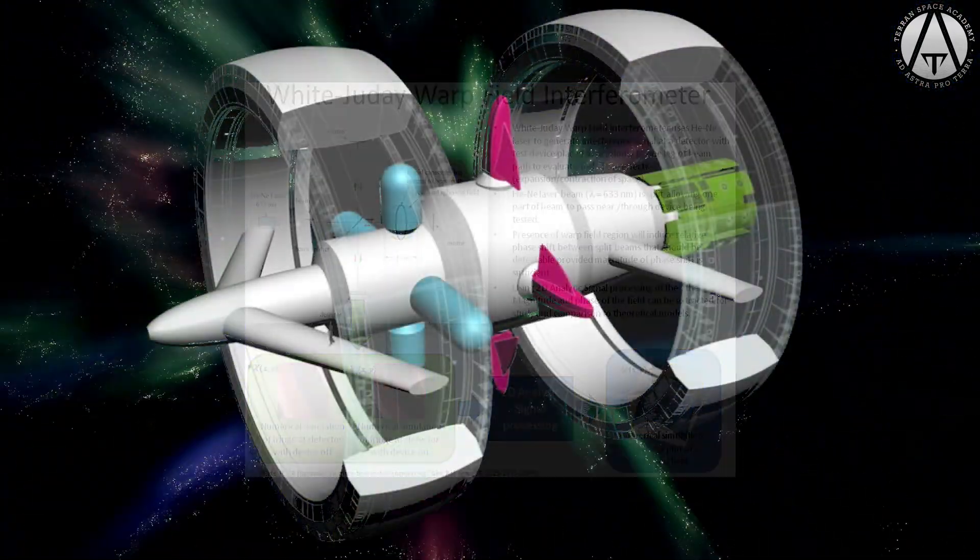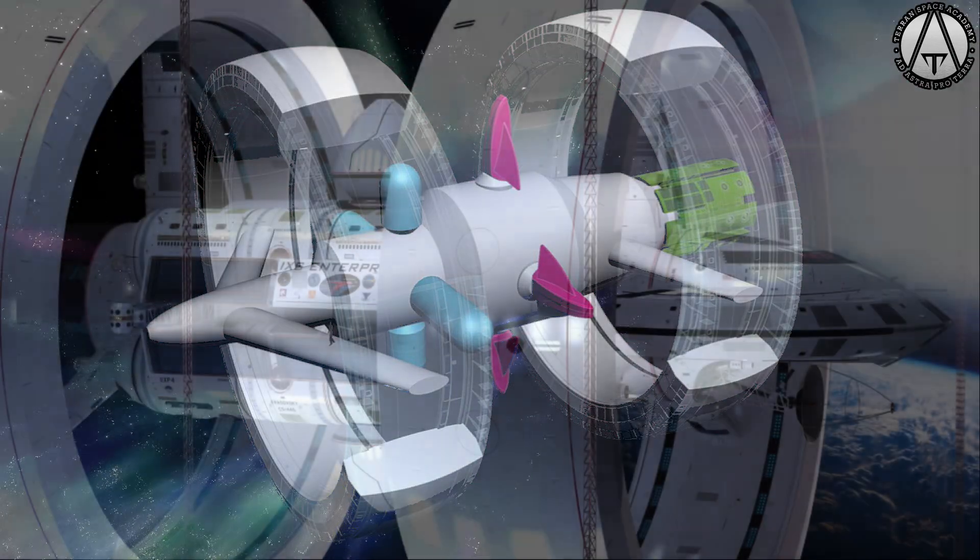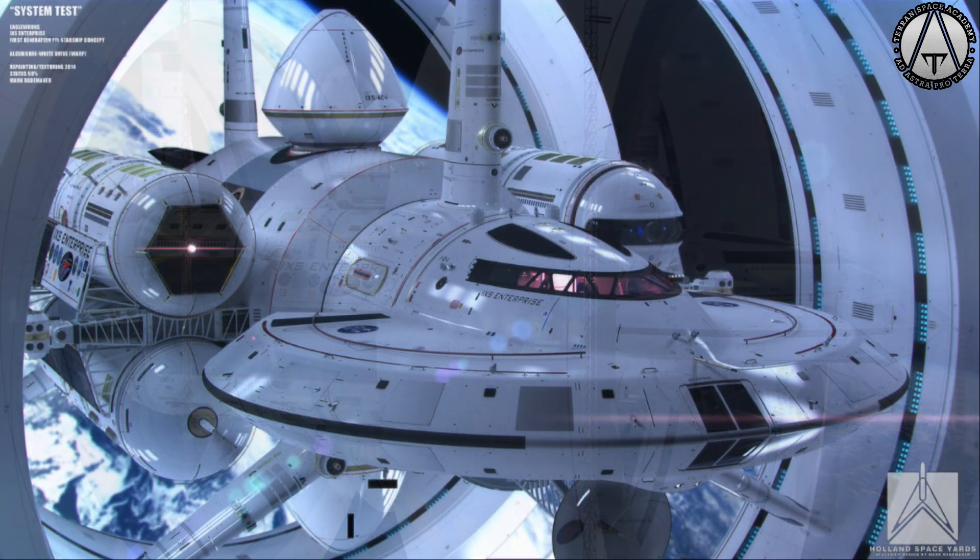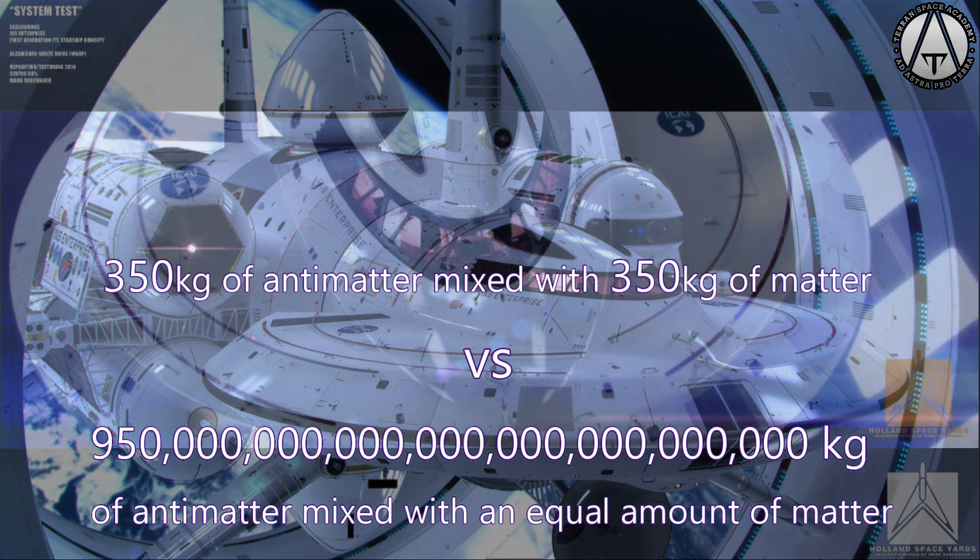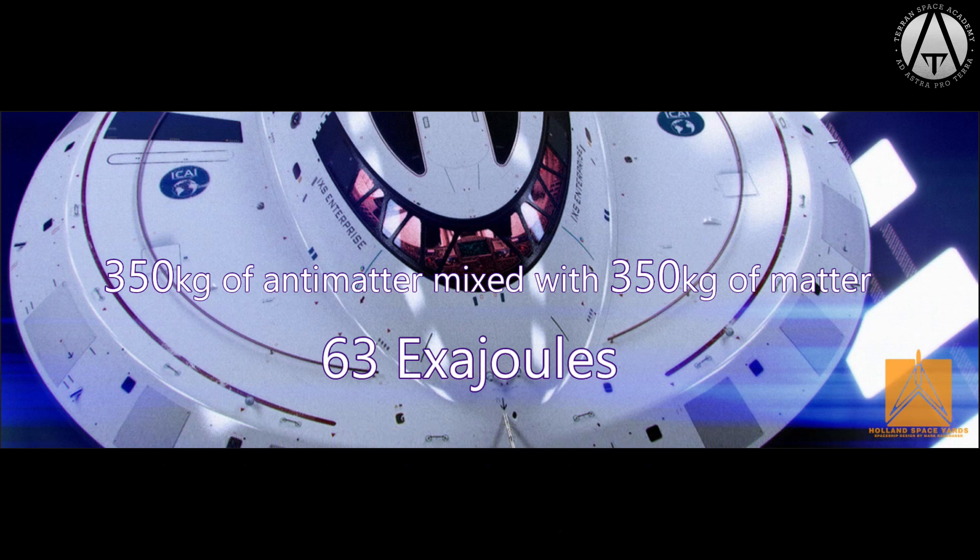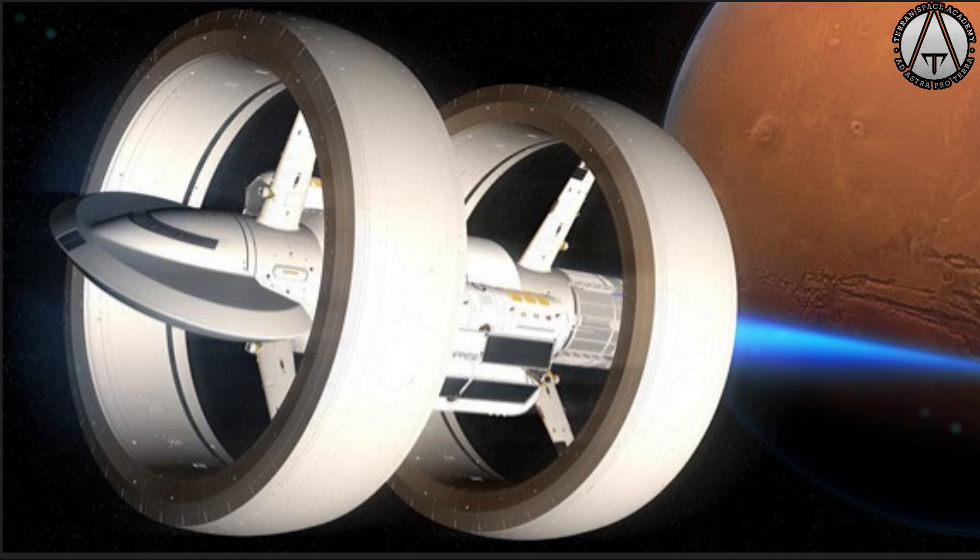In fact, this spaceship, the ISX Enterprise, imagined by Mark Rademacher, is based on Dr. White's design. It has a forward torus to compress space and an aft torus to expand it. It would only require 700 kilograms of mass converted to energy. This is 63 exajoules, and still an incredible amount of energy. So the scientists will have to keep refining their equations until this drive is technologically feasible.